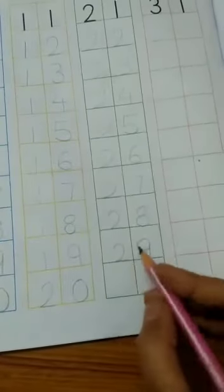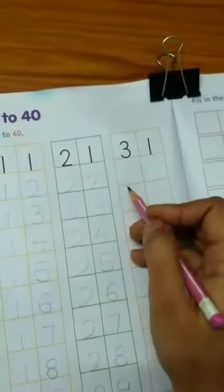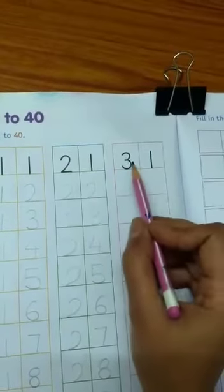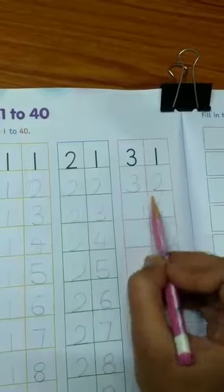What comes after 29? 3, 0, 30. What comes after 3, 0, 30? 3, 1, 31. What comes after 3, 1, 31? 3, 2, 32.